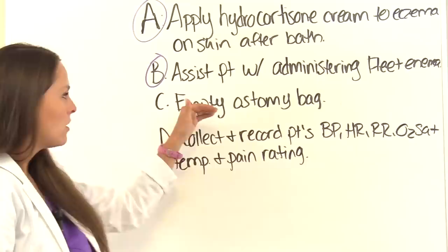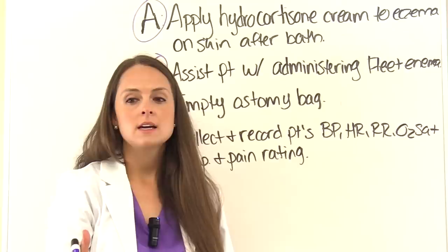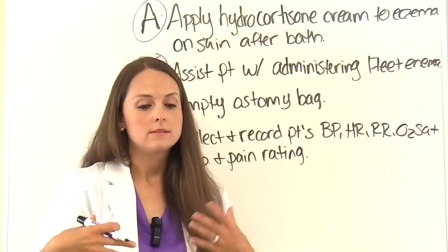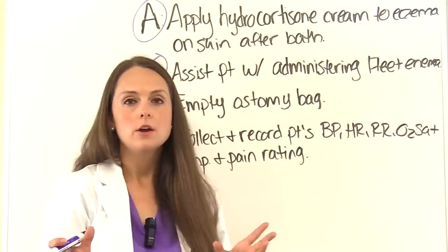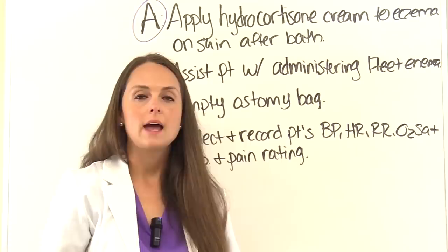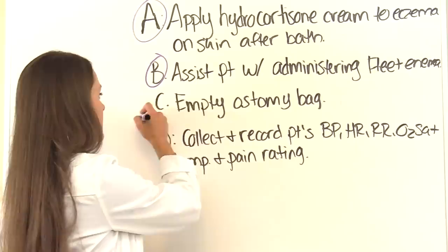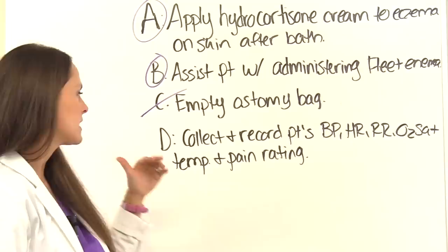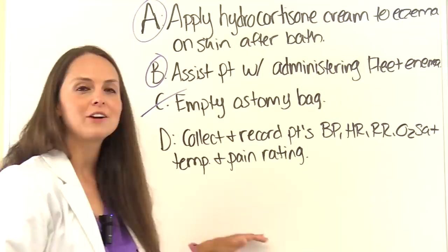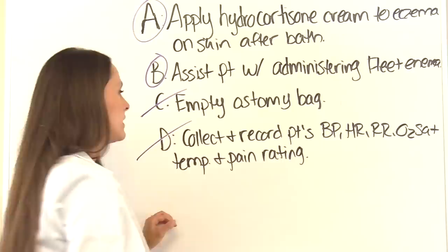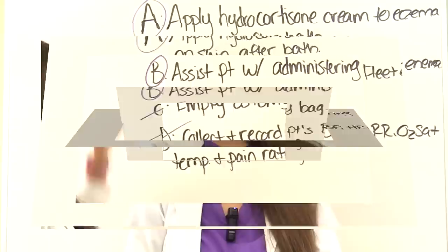Option C — emptying an ostomy bag — yes, they can do this. It's basic care helping with elimination, similar to changing a diaper or pad. Option D — collecting and recording a patient's blood pressure, heart rate, temperature, oxygen saturation, respirations, and pain ratings — that all falls into what a nursing assistant can do. So what needs to be reevaluated is options A and B. That wraps up this review over delegation. Thank you so much for watching — don't forget to take the free quiz and subscribe to our channel for more videos.